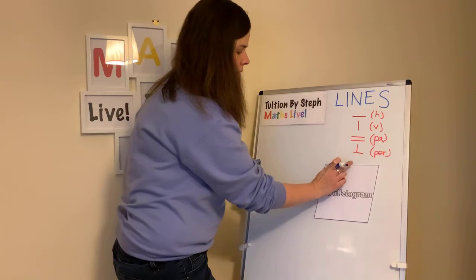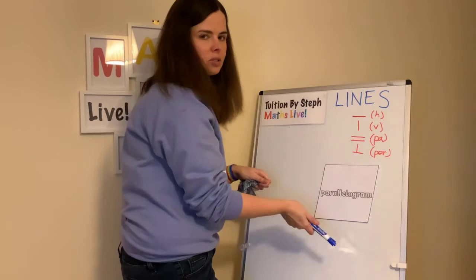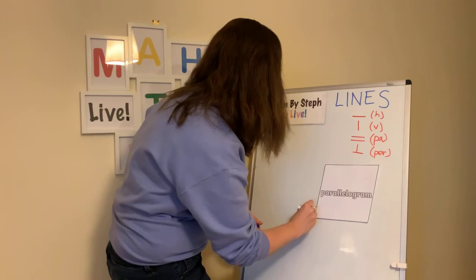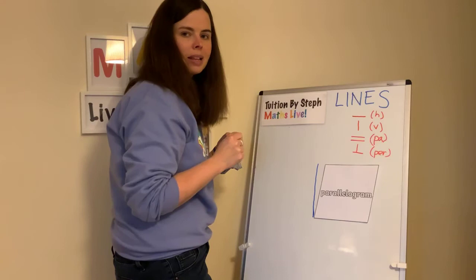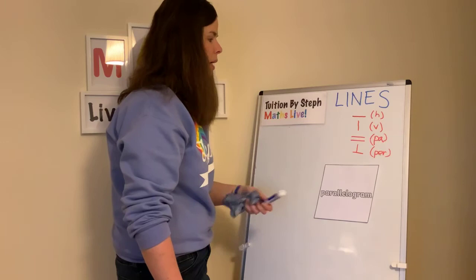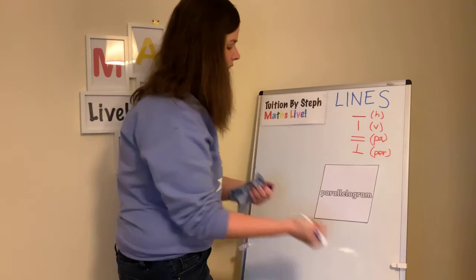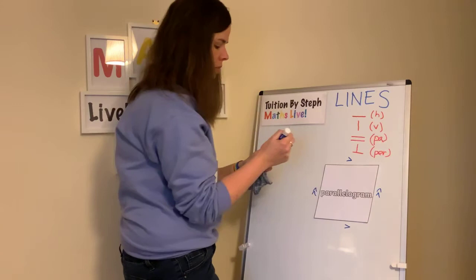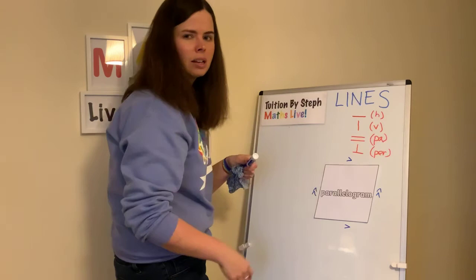Let's have a look at the parallelogram. Does it have any horizontal lines? Yes — these two are horizontal. Does it have any vertical lines? No, because these sides are tilted — I like to call a parallelogram a lazy rectangle, the leaning tower of rectangle. So no vertical lines. Does it have any parallel lines? The name gives it away — it does. These two here are parallel to each other, and these two here are parallel to each other. So it has two pairs of parallel lines. Does it have any perpendicular lines? No — these are an obtuse angle, a bit too big.